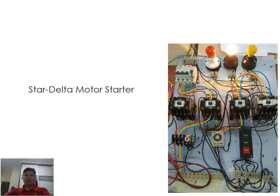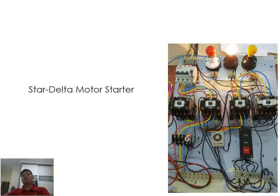This is a star delta motor starter. As you can see in the picture here, it's a very simple connection. It consists of a few contactors, a timer, a thermal overload relay, switches, circuit breakers for the power and for the control circuit, as well as an indication light for the motor status — either start, stop, or trip.